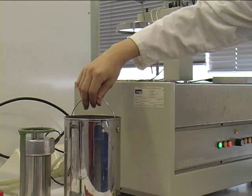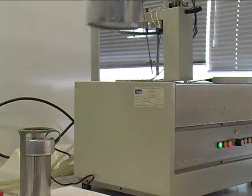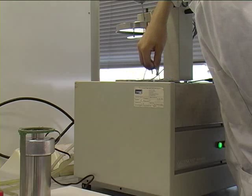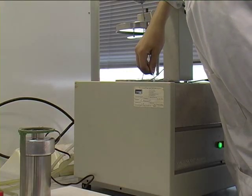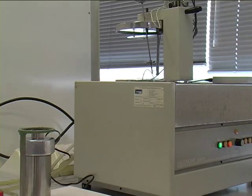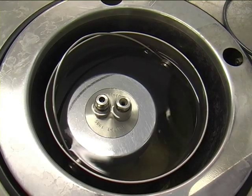The calorimeter is now assembled. A can of water is inserted. The can plus its contents weigh exactly 3 kilos. The assembled and pressurized bomb is then inserted in the can.